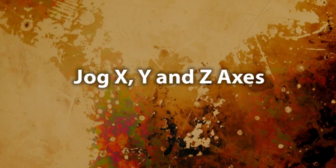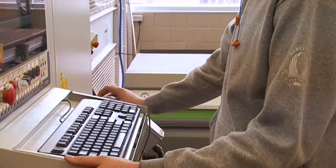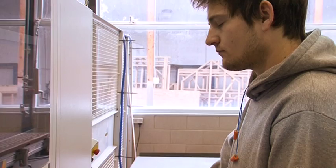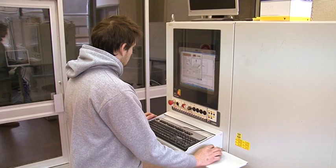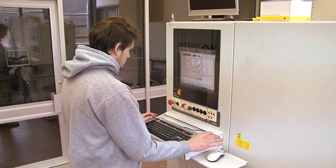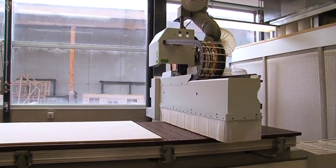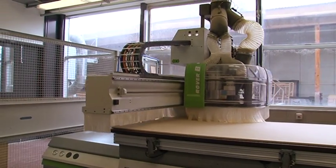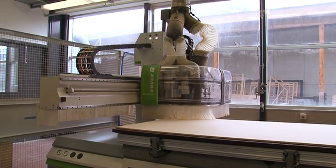Jog X, Y and Z axis. If manual movement of the machine is required, the manual movement on the quote window can be selected. If faster movement is desired, the rapid button can be pressed simultaneously with either the plus or minus buttons.